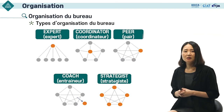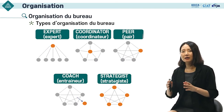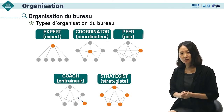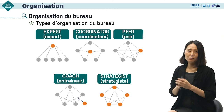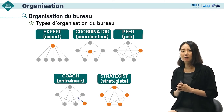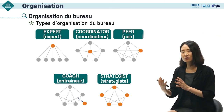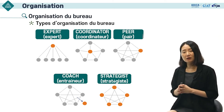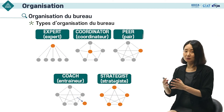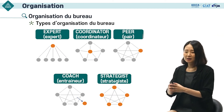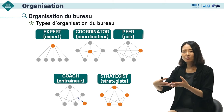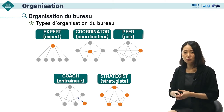En ce qui concerne les types d'organisation du bureau, le plus général est celui d'expert, avec la structure d'un chef et des membres au-dessous de lui. Si une force opérationnelle est composée, elle peut adopter le type de « coordinator » ou de « peer ». Quand une annexe est nouvellement créée, nous y envoyons parfois un chef d'équipe. Le type de « coach » est souvent introduit pour cette occasion ou quand on reçoit une consultation extérieure.